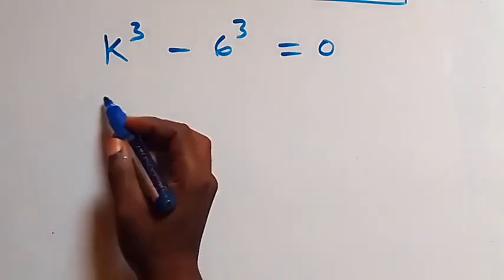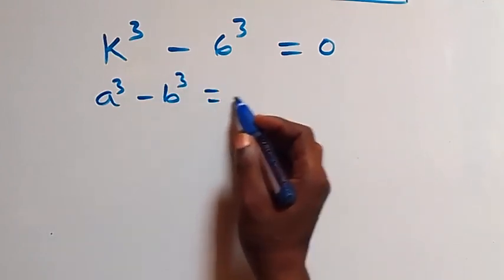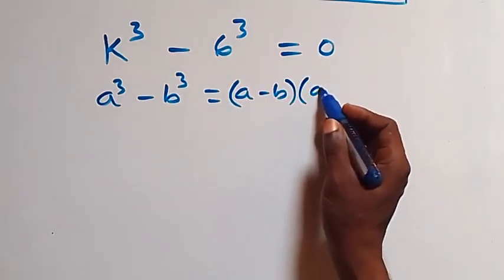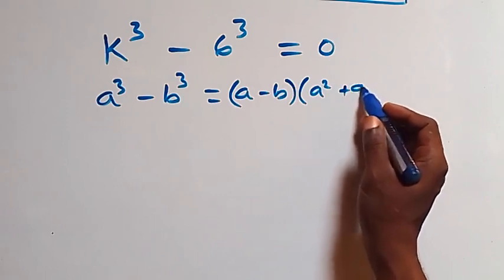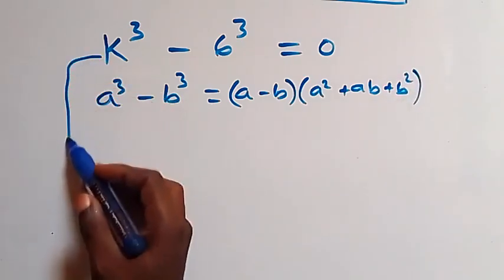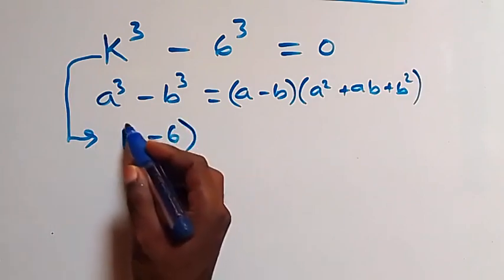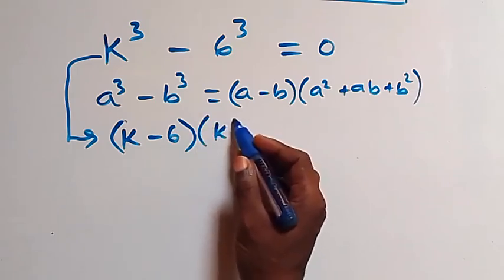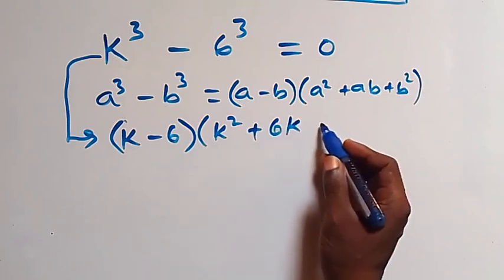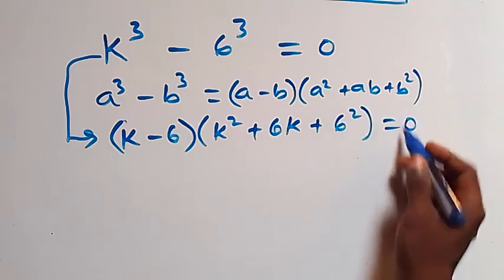Solving from the second case, this follows from a³ - b³ equals (a - b)(a² + ab + b²). Following this, we get (k - 6)(k² + 6k + 36) equals 0.